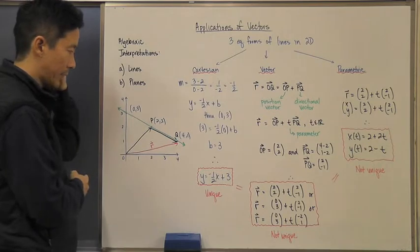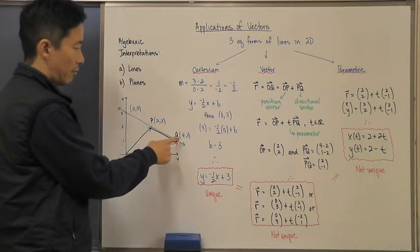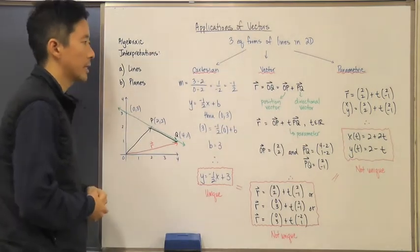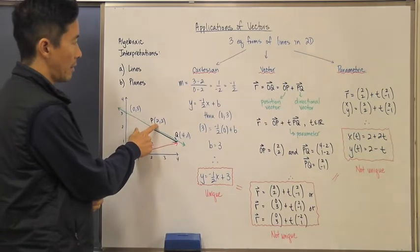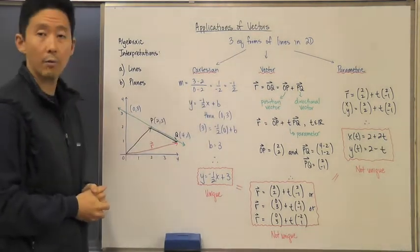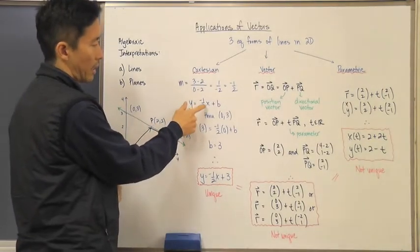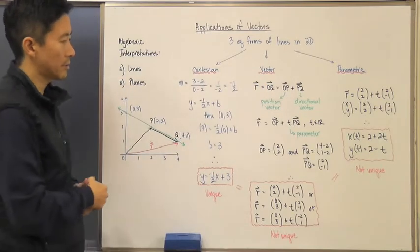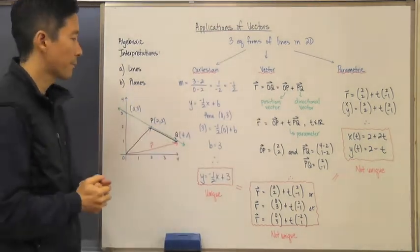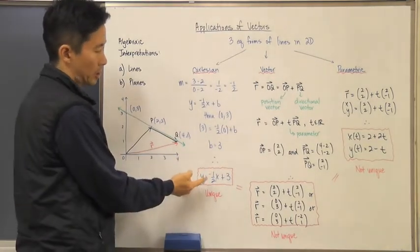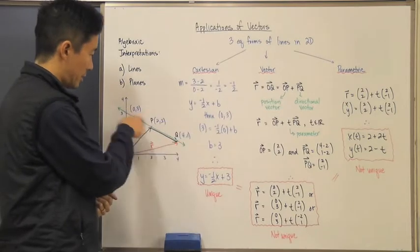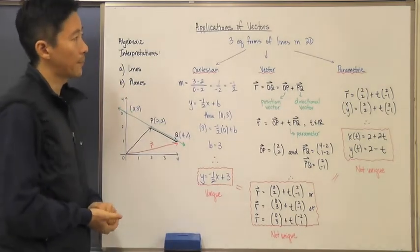I've drawn a diagram of a particular line that goes through (0, 3), (2, 2), and (4, 1). For the Cartesian form I need to find its slope, so I use two of these points: (3 − 2) divided by (0 − 2) gives a slope of negative one half. The equation is y = −½x + b, and substituting (0, 3) gives b = 3, so the Cartesian form is y = −½x + 3.